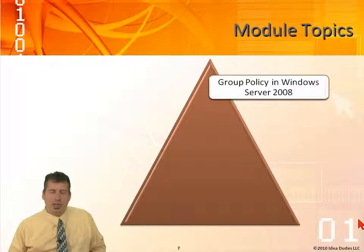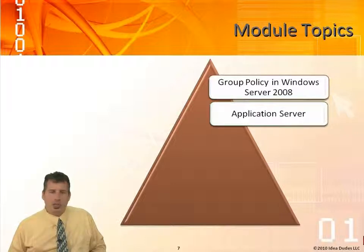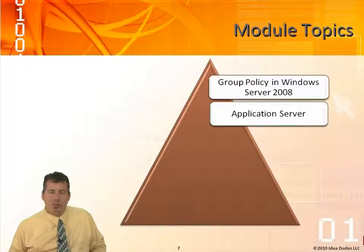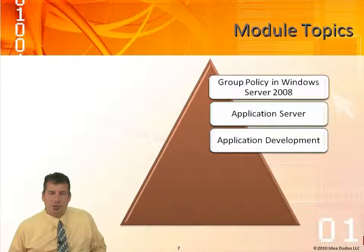We'll also be talking about implementing the central store. The application server is another area we'll look at — it allows us to implement a web server, as well as applications like Exchange Server and SharePoint. We're going to talk about the WCF, the Windows Communications Foundation, and other things associated with the application server. Application deployment deals with going through SCCM, implementing applications through Group Policy, and discussing Windows Installer 4.0 and resilient-type applications.